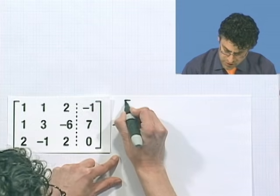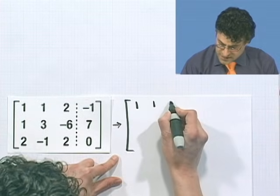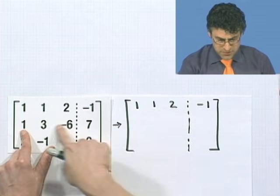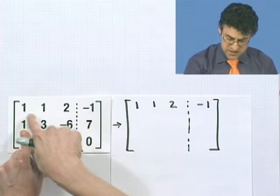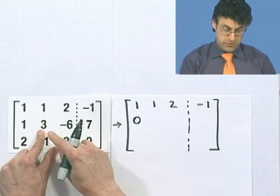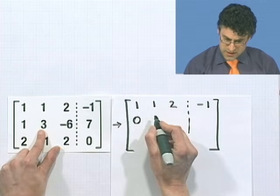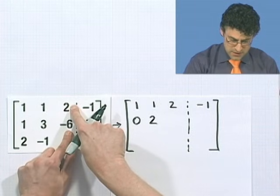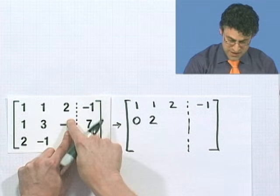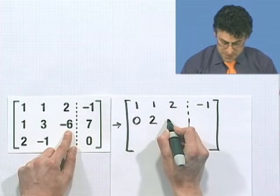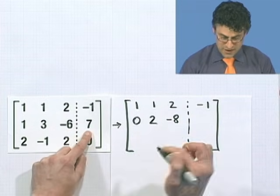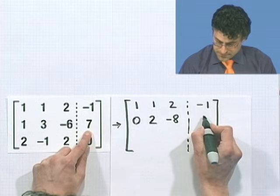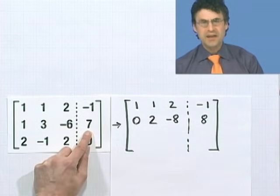This is going to be transformed into a new augmented matrix. I'm going to keep the top row as it is. Now I'm going to take this row and add it to negative 1 times this row. So this minus this is 0. 3 minus 1 is 2, negative 6 minus 2 is negative 8, and 7 minus negative 1 is 8.